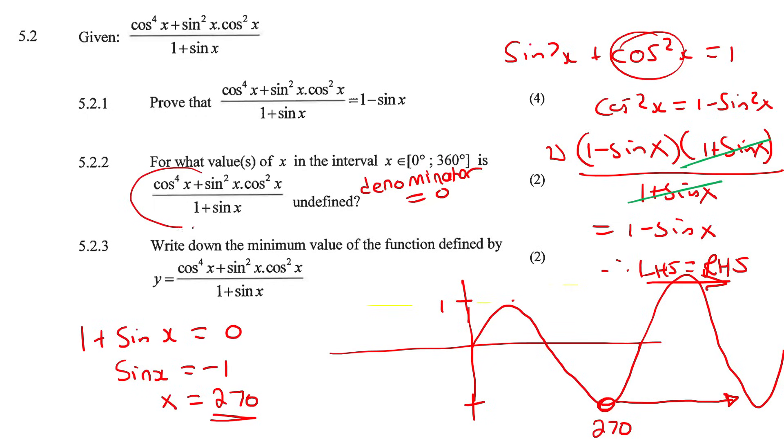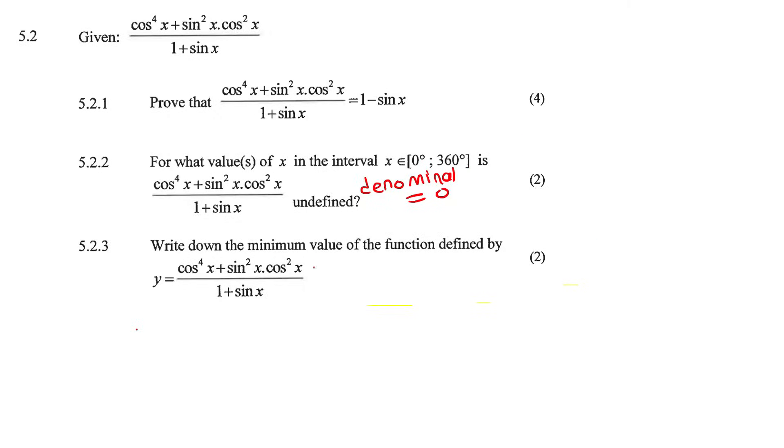Some of you might be saying, well Kev, why didn't we do that with question 5.2.2? Well that's because there we don't have a denominator. Here we do, and to be able to do undefined we want a denominator. So we're not going to look at the original expression. We're just going to look at 1 minus sin x.